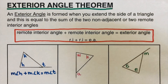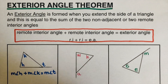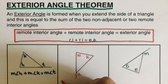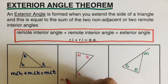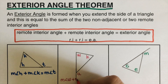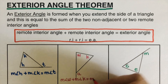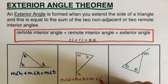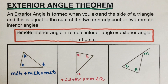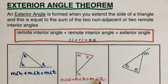Now let's look at the second triangle. The two remote interior angles are W and K. So the measure of angle W plus the measure of angle K is equal to the measure of angle A, the exterior angle.